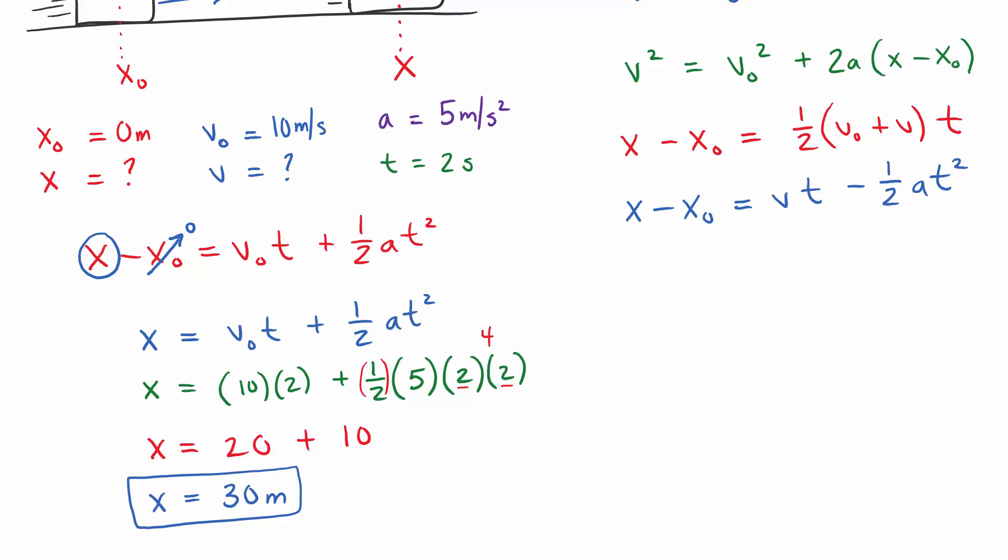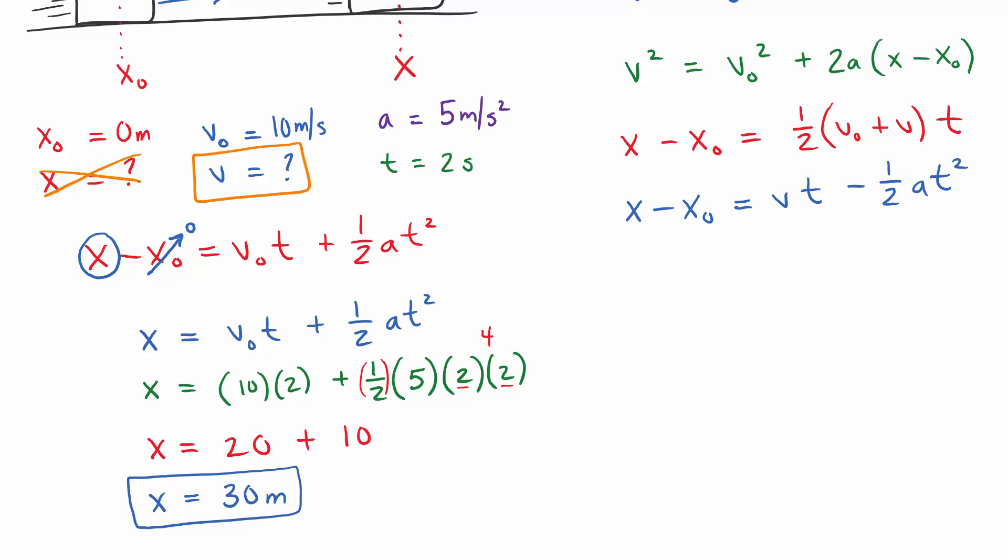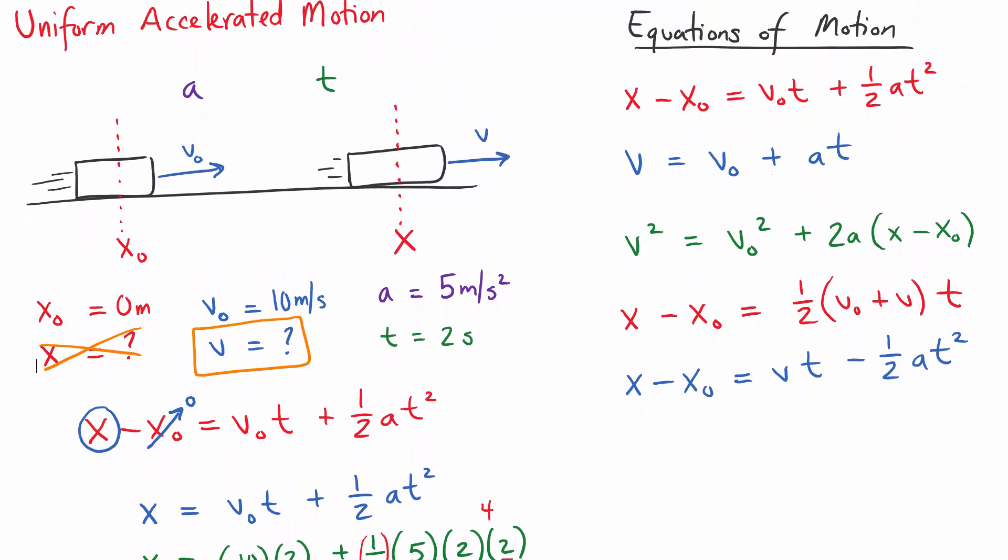Suppose instead we wanted to find the final velocity. And we didn't know the final position. In that case, we need to go back to our equations of motion. And this time, find the equation that has velocity but doesn't have final position. If we look at the first equation, it doesn't even have the final velocity in it. And it does have the final position. So we can't use that equation. This equation has the final velocity. And it's missing the final position. This is the one we need to use. Just to confirm, you can see the other equations. It has an X. Can't use it. We don't know X. Don't know X. Don't know X. So these other equations can't work. So that's the one we're going to use. It's V equals V naught plus AT.